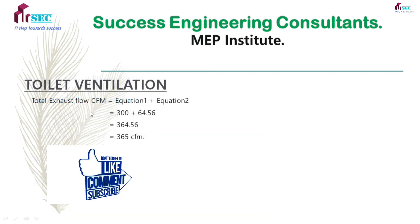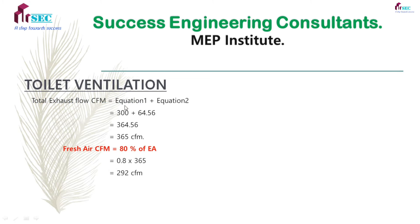Combining both, the total exhaust flow rate is equation one plus equation two: 300 plus 64.56 equals 365 CFM. For fresh air, we calculate 90 percent of exhaust air; I am considering 80 percent here, so 0.8 into 365 equals 292 CFM.